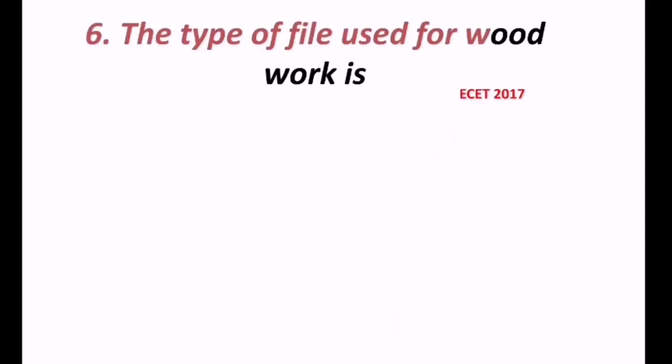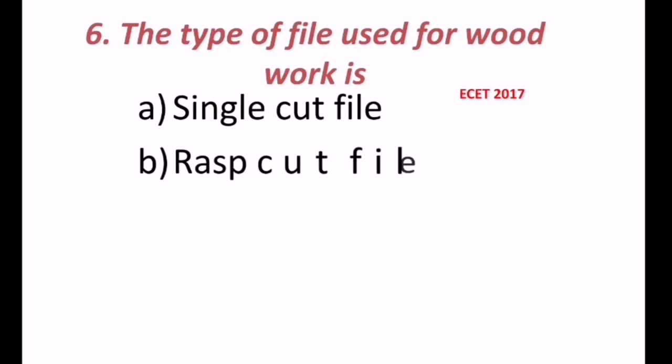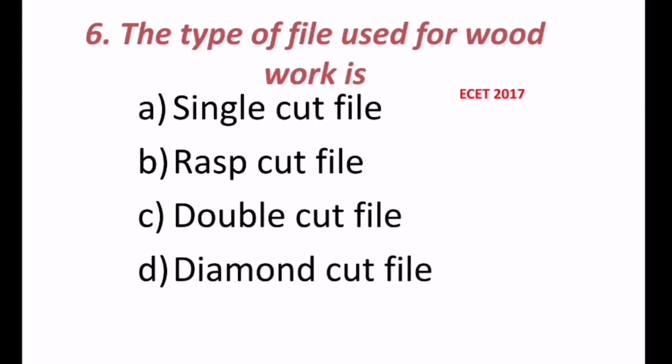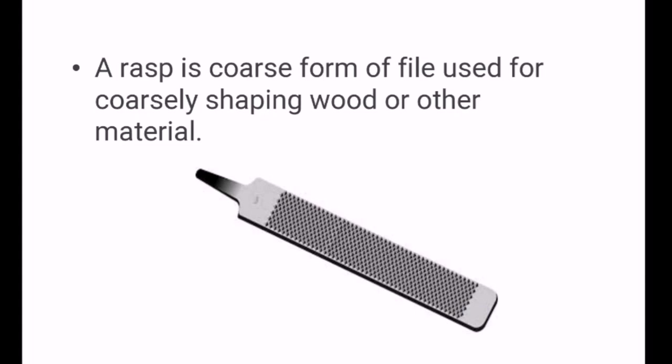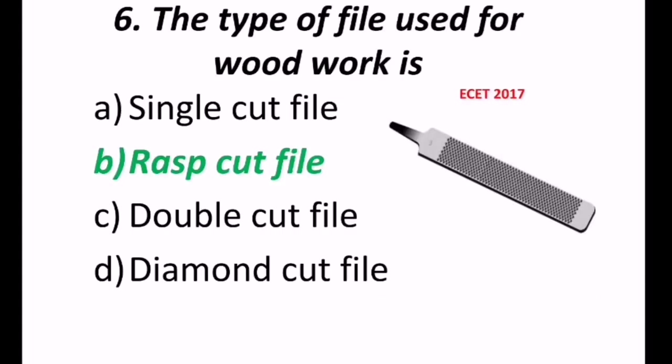6th question reads, The type of file used for woodwork is. May be single cut file, or rasp cut file, double cut file, or diamond cut file. This question came in ECET 2017 exam. So the answer for this is rasp file. A rasp is a coarse form of file, used for coarsely shaping wood, or other materials. Hence the correct answer is, rasp cut file, B is the correct answer.